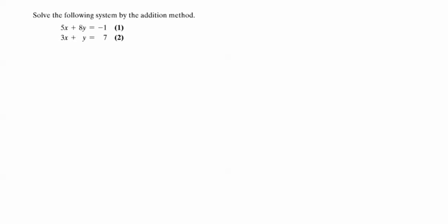The third method that we're going to use to solve systems of equations is called the elimination method or the addition method. In this method, what we want to do is line up our variables in the two different equations, as we see here: 5x over 3x, 8y over y, and then our constants, negative 1 and 7.